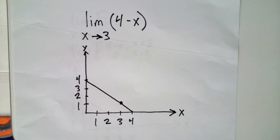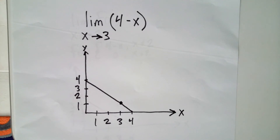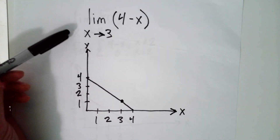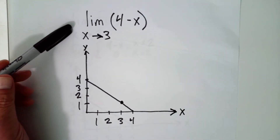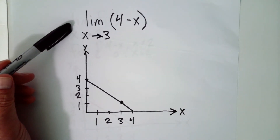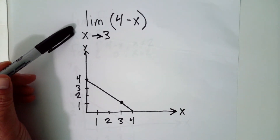Hi, Calculus. I'll talk you through a couple of these limit problems from section 1.1. We're supposed to use the graph to find the limit if it exists. So we have the limit as x approaches 3 of the function 4 minus x.